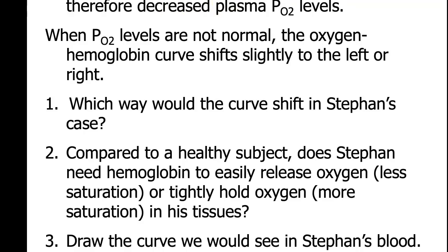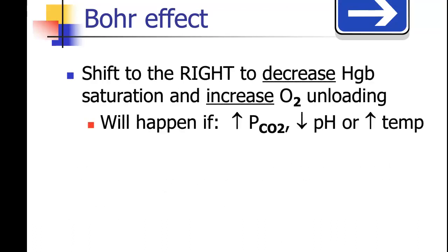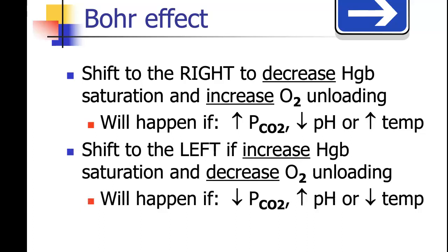The shift in this curve is called the Bohr effect. When you get a shift to the right, it decreases hemoglobin saturation and increases oxygen unloading. This will happen if you have an increase in pCO2, a decrease in pH, or an increase in temperature. In a shift to the left, you have increased hemoglobin saturation and decreased oxygen unloading — this happens if you have a decrease in pCO2, an increase in pH, or a decrease in temperature. Left shifts favor hemoglobin saturation; right shifts favor oxygen unloading.